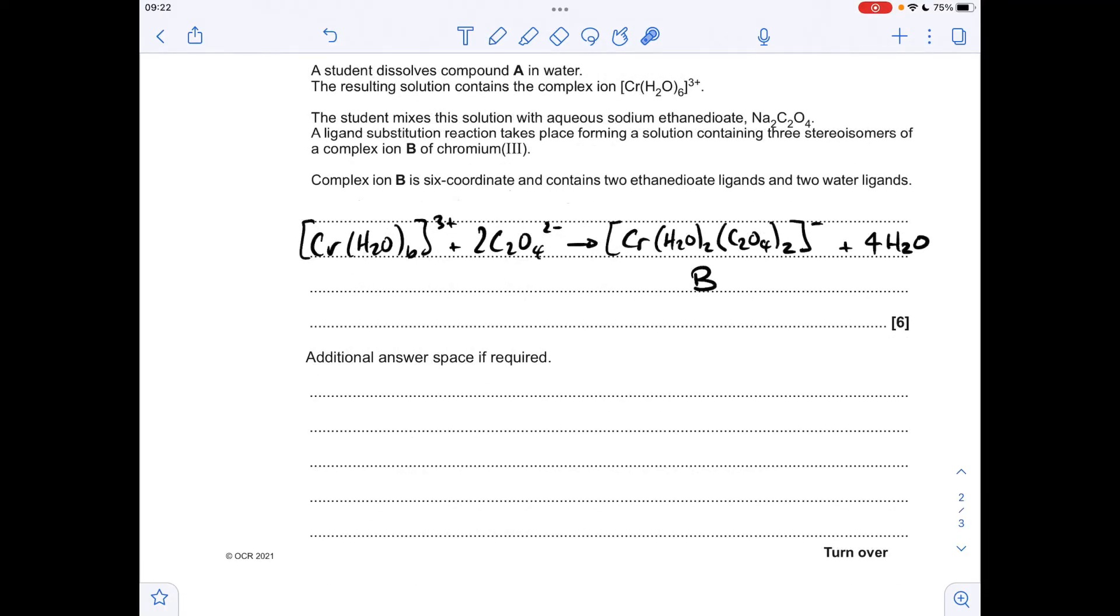So moving on to the next part, the production of B, you can see I've already written up the equation there. We were told that once compound A was in water, we've got this hexa-aqua-3 ion present. So that's what's actually reacting with the ethane diuate ions. Why do we have 2? Because we're told that complex B is 6-coordinate, contains 2 ethane diuate ligands and 2 water ligands. So obviously if it started with 6 waters, 4 have been substituted.